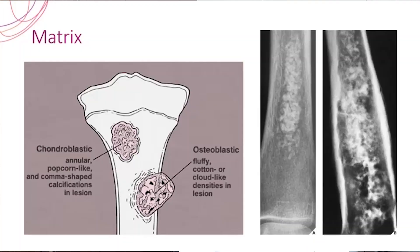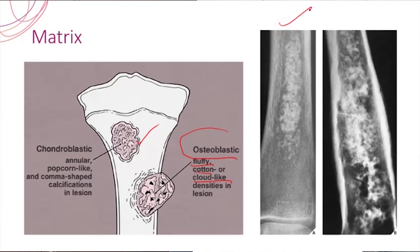Coming on to the matrix. A chondroblastic tumor will have an annular, popcorn, or comma-shaped matrix, while an osteoblastic tumor will have fluffy, cotton and cloud-like densities as shown in this slide. So the possibility of this being chondrogenic is very high and this being osteogenic — the possibility is high. A comment about the matrix, if you could tell, will definitely give a better impression about your knowledge to the examiners.